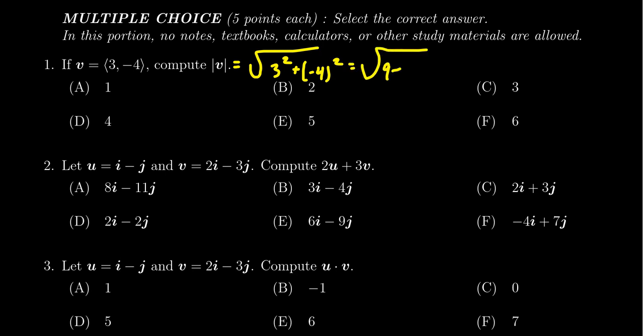We end up with the square root of 9 plus 16. 9 plus 16 is 25, and so we get the square root of 25, which is 5. The magnitude of a vector is always positive, and this causes us to select choice E.